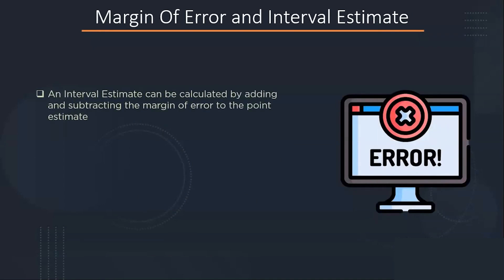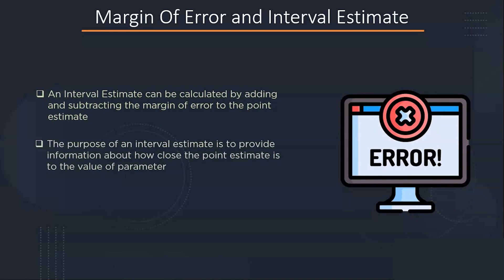The interval estimate can be calculated by adding and subtracting the margin of error to the point estimate. It gives us the idea of how close the point estimate is to the value of parameter. The general form of the interval estimate is x bar plus minus margin of error.